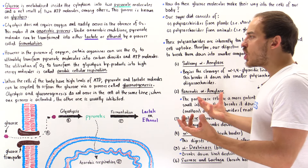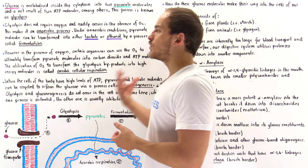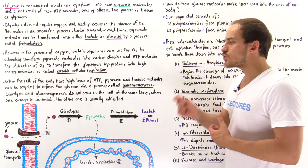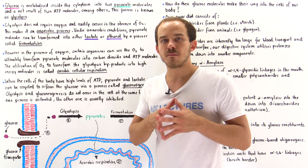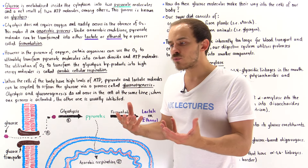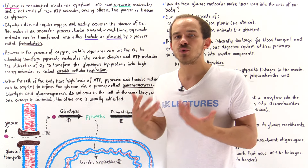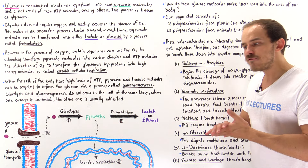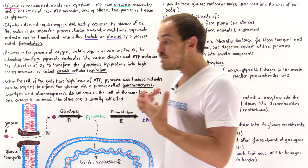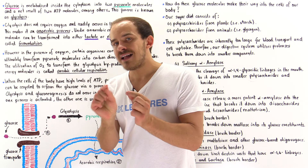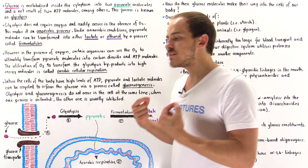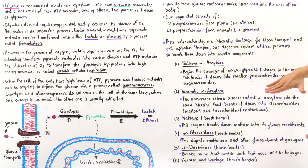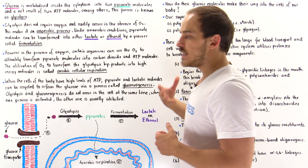Now we know the general idea of what glucose metabolism actually is. But how does glucose actually make its way into the cells of our body — or more generally, into our body in the first place? Well, via the ingestion of food. If we eat a meal that is rich in carbohydrates, that's how glucose makes its way into our body. There are two types of carbohydrate molecules that we typically ingest.